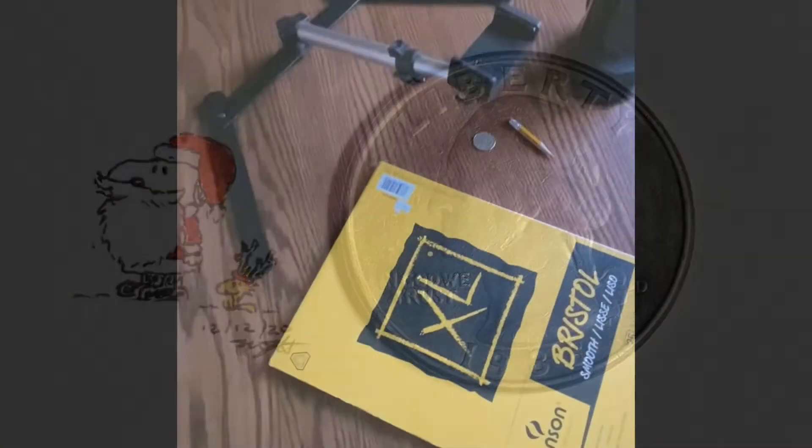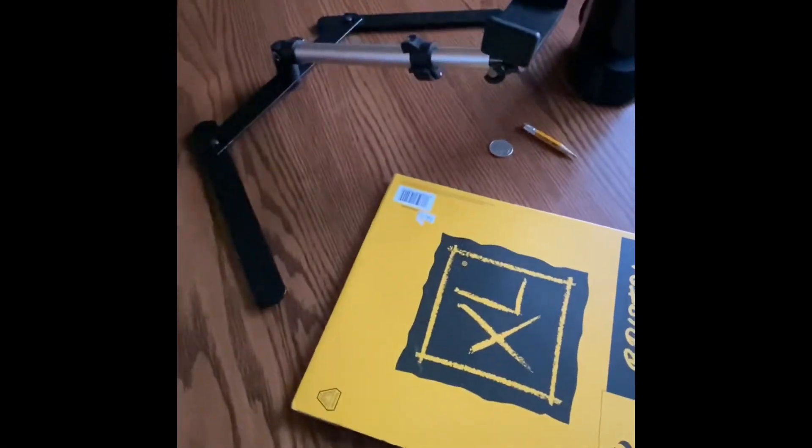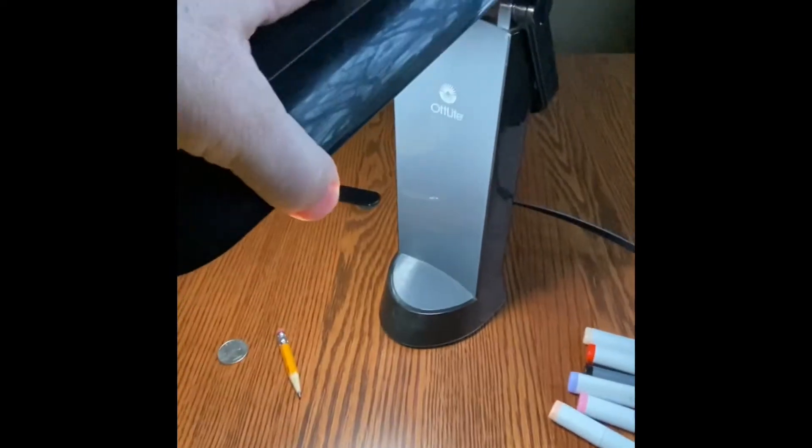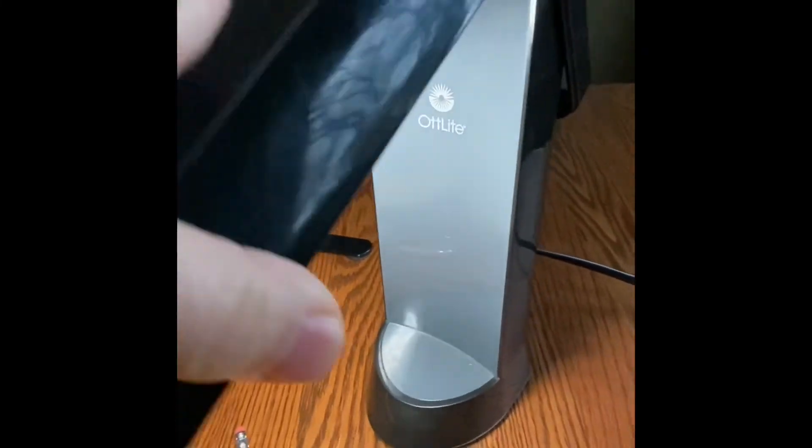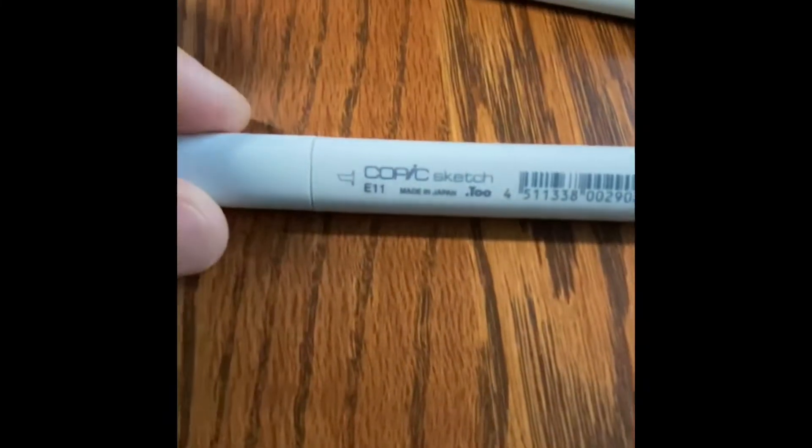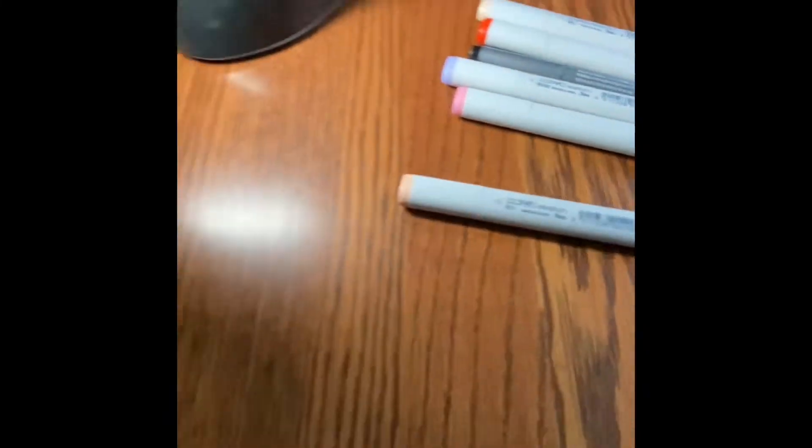Thanks for checking out my micro drawings channel. I'm drawing Snoopy and Woodstock in their Christmas outfits today. Here's a quick tour of my setup: my iPhone stand, OT light for clear illumination, Copic sketch markers and Copic multiliner in gray.